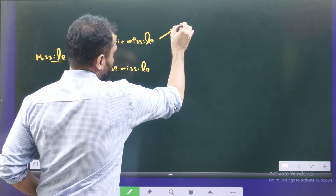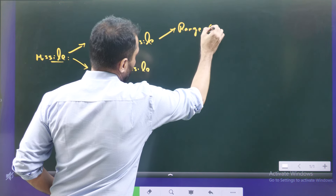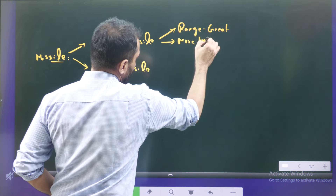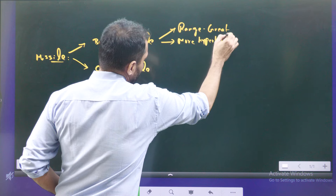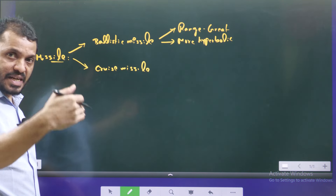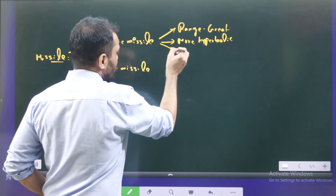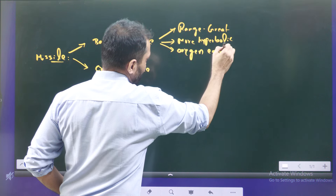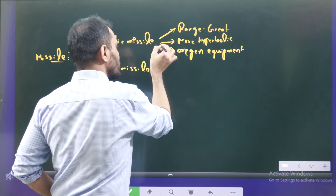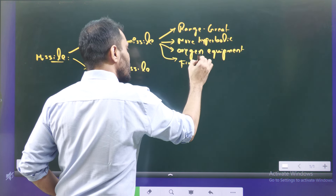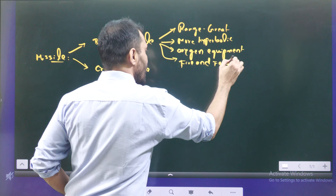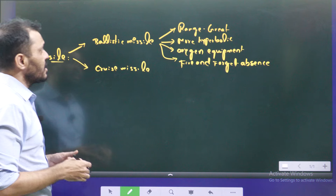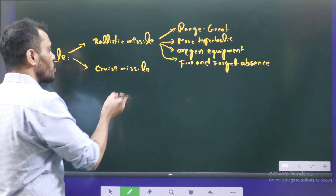Ballistic missiles have a very great range and their path is more hyperbolic in nature. They exit from the earth's atmosphere and re-enter into it. They do not require oxygen from the surrounding environment. They generally use a 'fire and forget' mechanism — meaning, once launched, they follow a pre-set trajectory. These are the key characteristics of ballistic missiles.